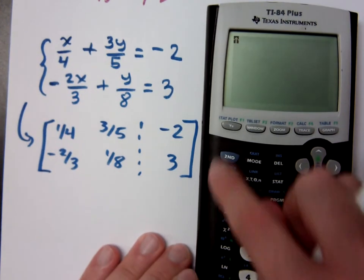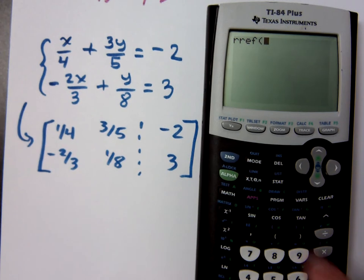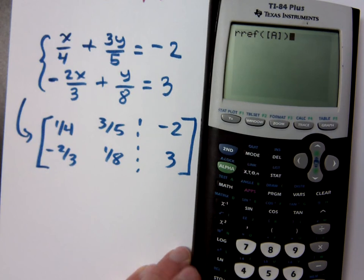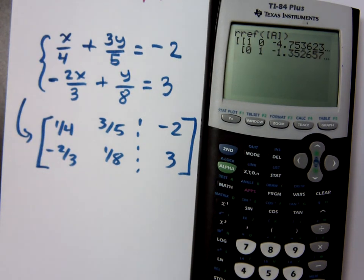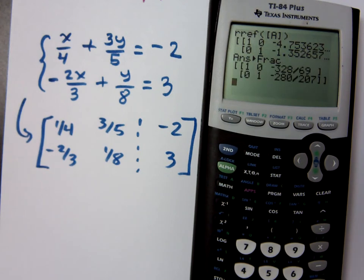And then do your reduced row echelon form of matrix A. I get some nastiness, right? That's nasty. However, math, convert to a fraction. And there we go.